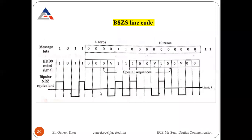B8ZS can be easily detected and corrected by two units: the CSU (Channel Service Unit) and the DSU (Data Service Unit). Looking at the B8ZS waveform, we use BPV (Bipolar Violation) — polarity violations are inserted. For four zeros, the sequence 000V is used, and for eight zeros, a special 8-bit sequence is inserted.